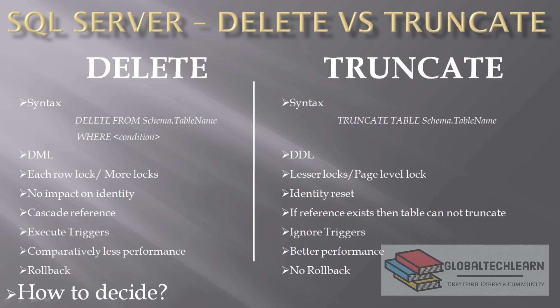Regarding cascades: as we saw with DELETE, we can enable cascade to delete referenced records from a related table. However, this does NOT work with TRUNCATE. If there is any reference to the table, TRUNCATE will fail. Similarly, if there is any trigger configured on the table, TRUNCATE will ignore it because it does not work record by record and therefore does not fire any triggers.